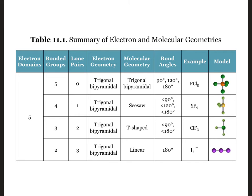The larger number of electron domains makes it possible to have far more molecular shapes when lone pairs are present, so our chart for five electron domains is extensive. At the top of our chart, we see phosphorous pentachloride, which has five bonded groups, no lone pairs, and the geometries are both trigonal bipyramidal.